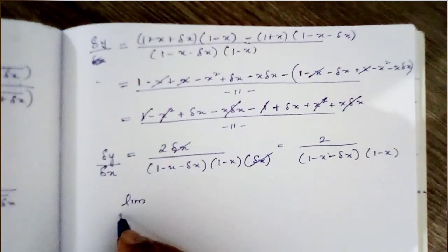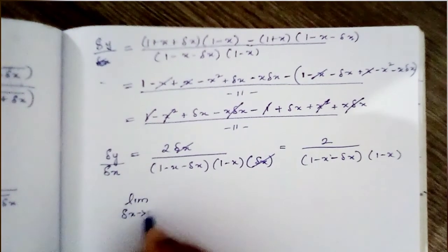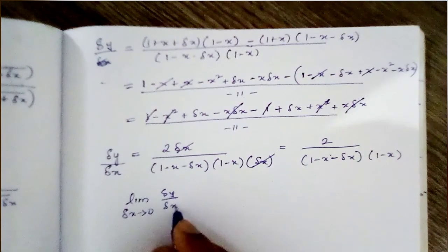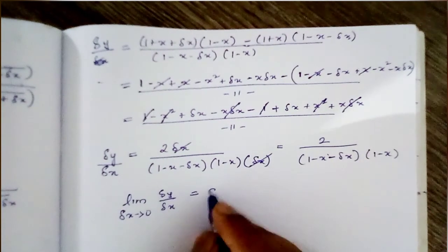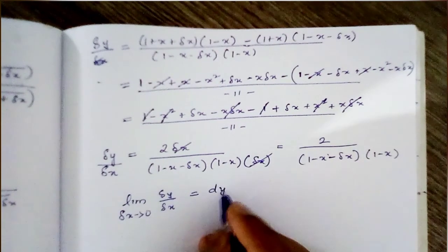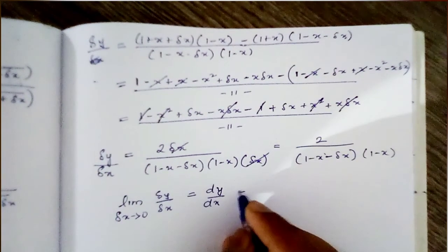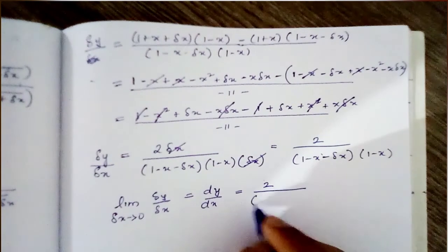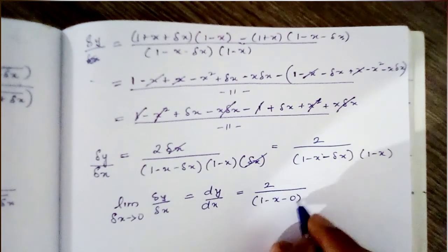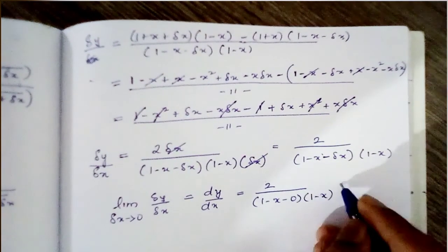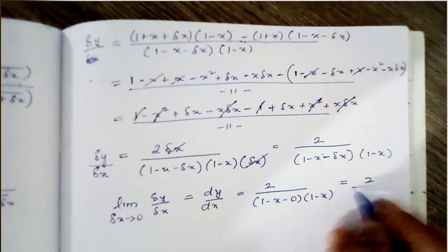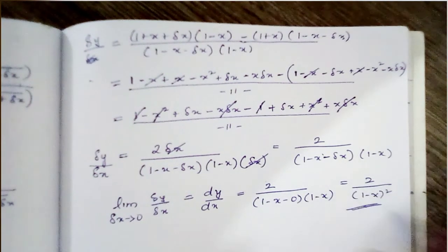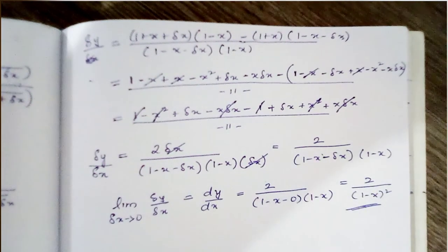Applying the limit as del x tends to 0, del y by del x gives dy by dx equals 2 by (1 - x - 0) into (1 - x), which equals 2 by (1 - x) squared. This is the final answer. Thank you for watching.